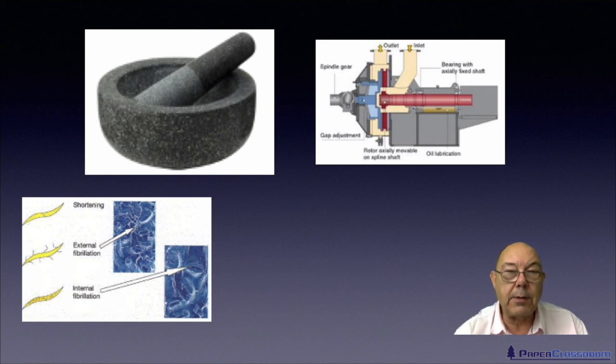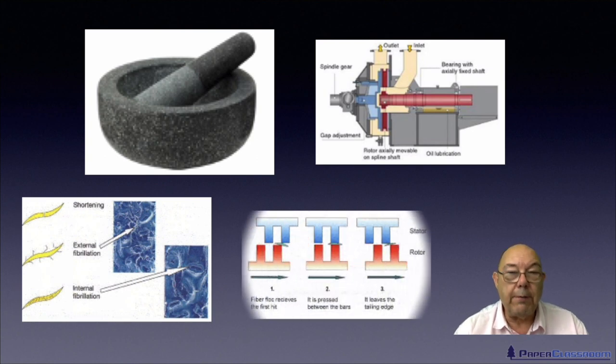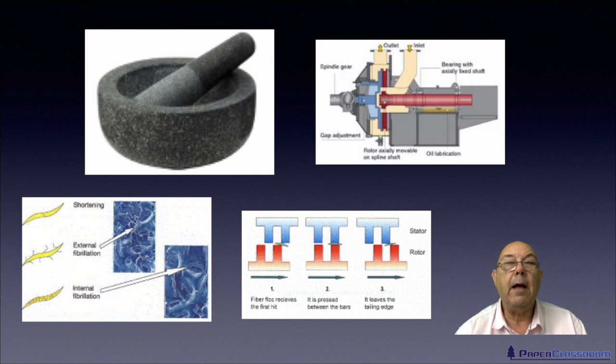The three things that refiners and beaters do, which is shortening the fiber, externally fibrillating the fiber, and internally fibrillating the fiber. And we'll look at exactly how it does that. We'll look at the five steps of refining.